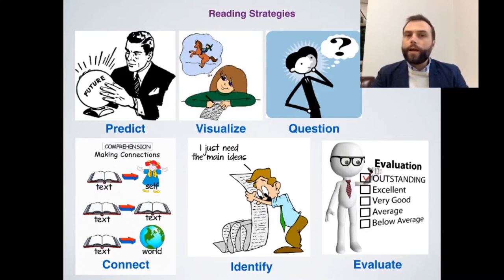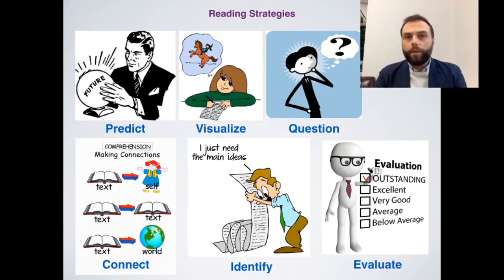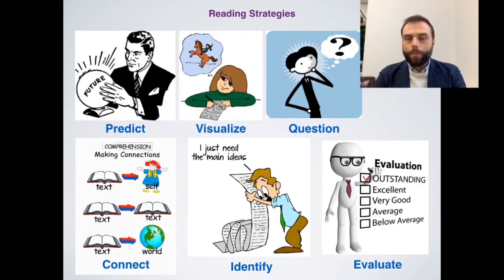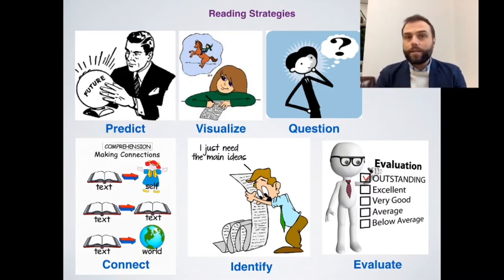The next strategy is visualize. As we listen and as we read, we visualize things, and we can use that in our teaching. It could involve visual activities like drawing or finding pictures, or having students describe what they're imagining as they read or listen. The next one is question — and this is not the teacher asking questions. This means the reader or listener asking questions. As you read or listen, we automatically ask questions to check our understanding, guess what might come next, and connect different information. Question means the learner thinking of questions and then answering them through listening and reading.